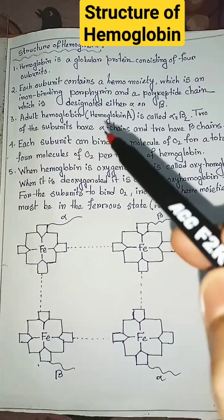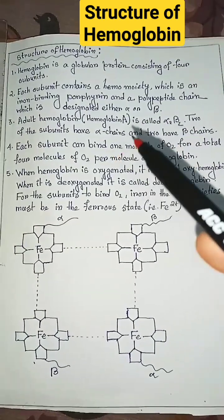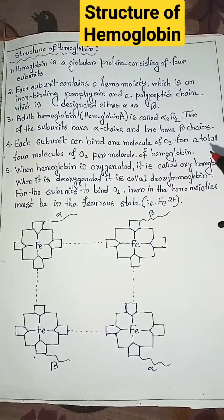Adult hemoglobin, that is hemoglobin A, is called alpha 2 beta 2. Two of the subunits have alpha chains and two have beta chains.